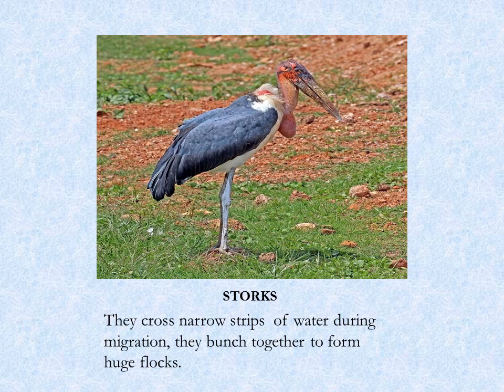They cross the narrow strips of water during migration because they cannot fly that much. They always move in flocks, not as singles. In your textbook, see the spelling and put the correct alphabet in the respective blank space for stork.